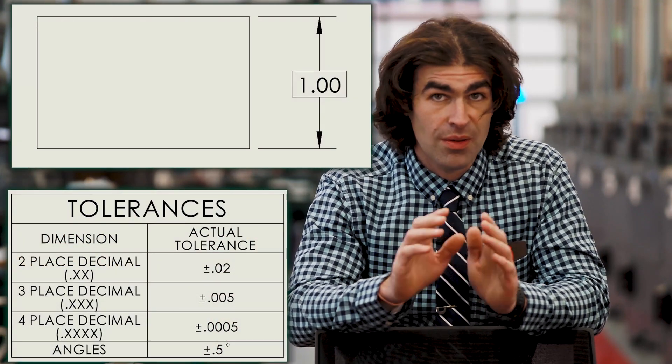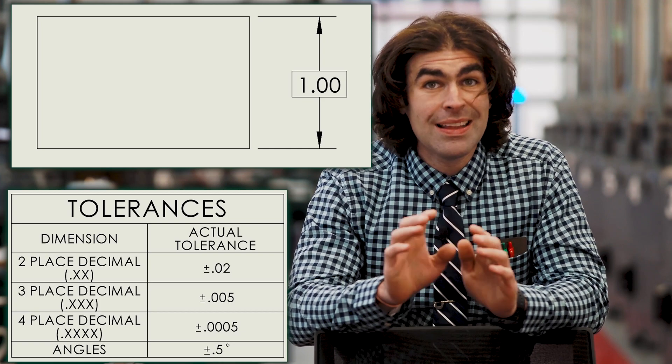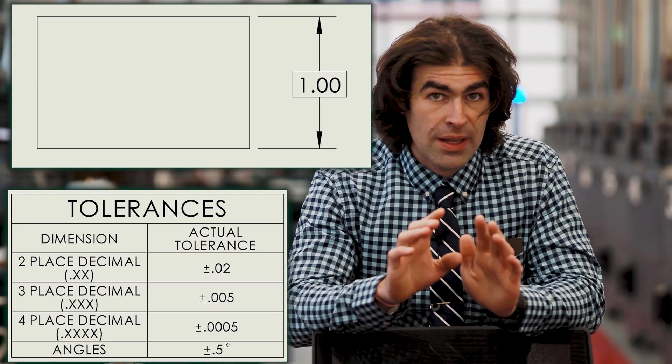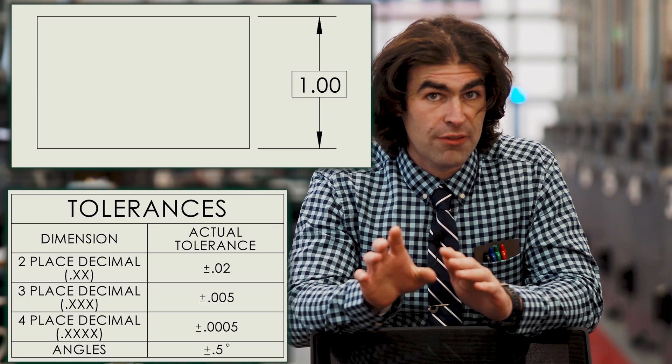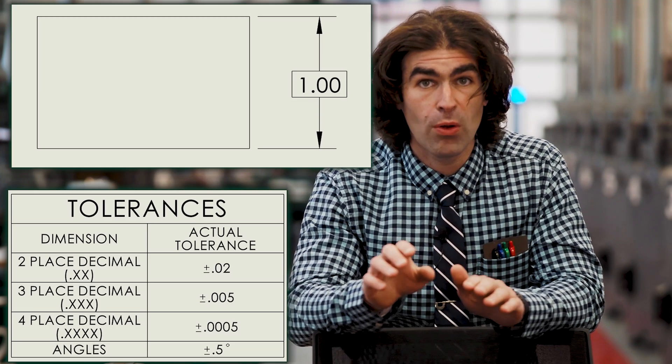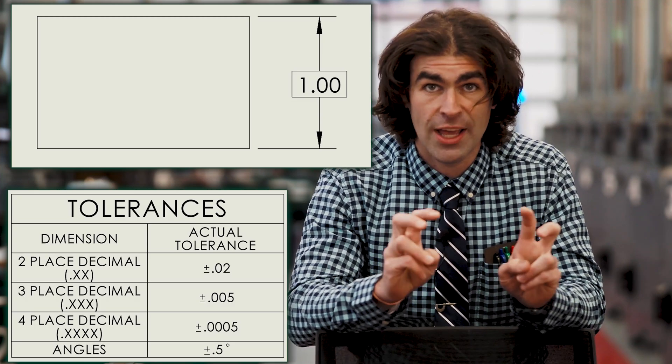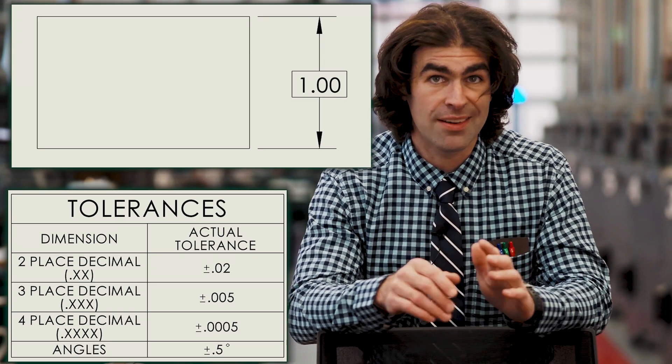So I have an example for you here of something, a title block tolerance. This won't apply to basic dimensions. So if it's missing the feature control frame, you can't just pull the tolerance from the title block and use that. So you've got to be very careful when you're using basic dimensions. You have to make sure each and every feature has a feature control frame that takes care of that dimension and tolerance.